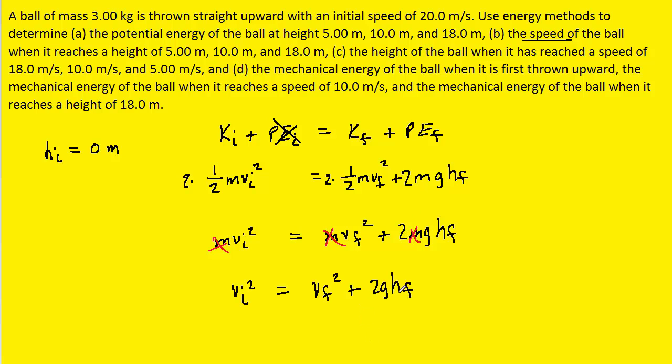We can then subtract this 2ghf over to the left-hand side. And then finally, we can take the square root of both sides so that we can isolate Vf.